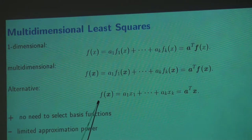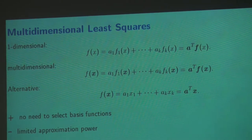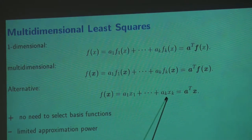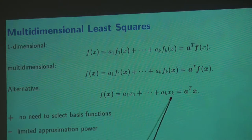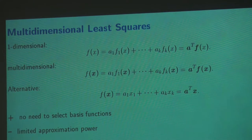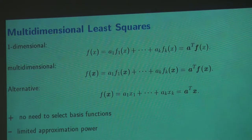There is a third variant where we apply it to multidimensional data — two vectors consisting of components X1 through XK. This is a linear function depending on X1 through XK. The X components appear linearly and the coefficients also appear linearly. With this ansatz, we can again apply the same method to determine our coefficients. So these are three variants, or three different application scenarios, and in all of them we can apply the least squares method.